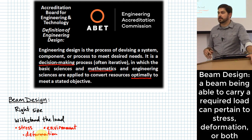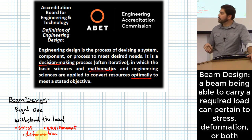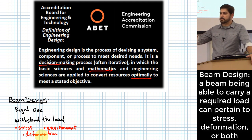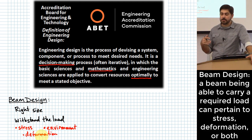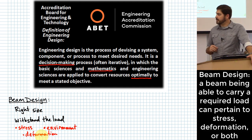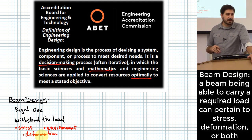In many buildings, it is primarily how much something will deform that controls how big it is made, versus how much stress it's actually carrying. Both are sometimes factors. For our beam design questions in this class, we're primarily going to look at the question of stress, but there are many applications where you'd need to design a beam looking at deformation as the primary constraint.